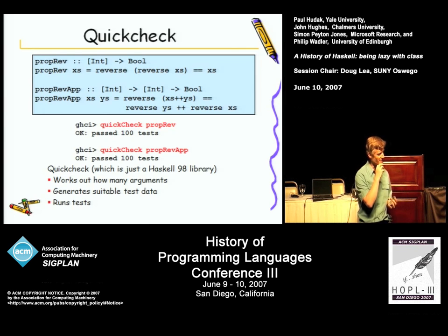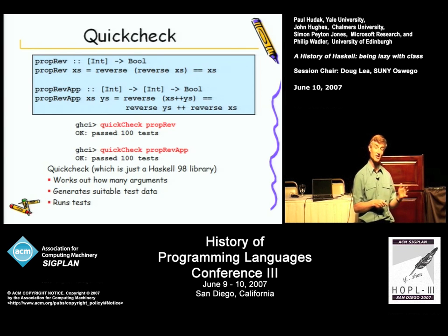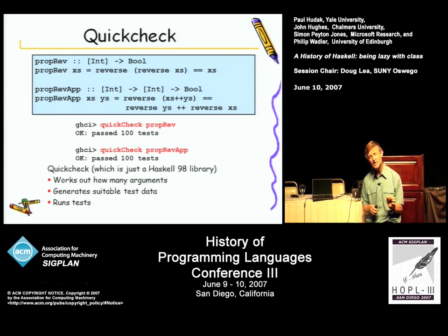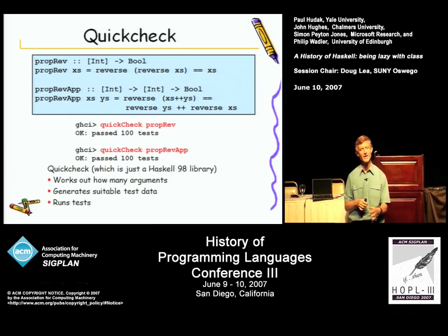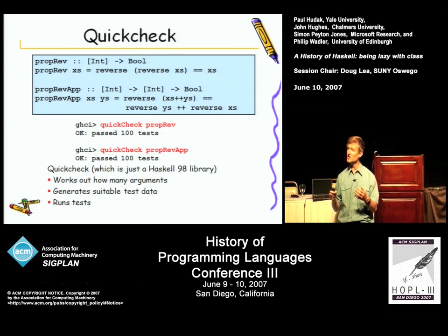QuickCheck is a Haskell library — just a library, not really an application at all. It's a library that does software testing, random testing.